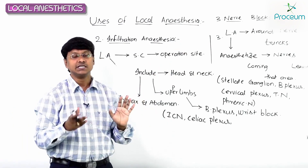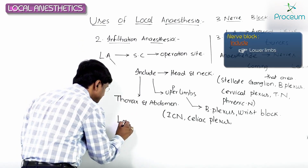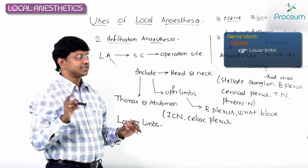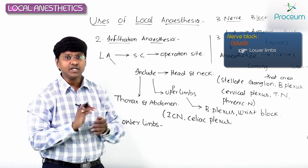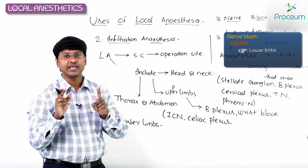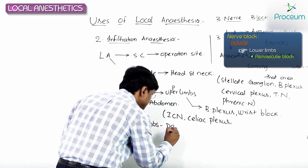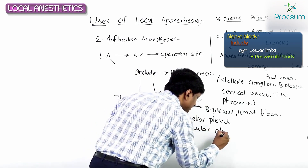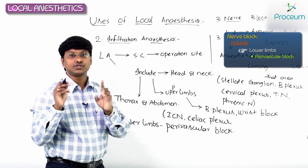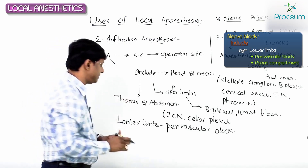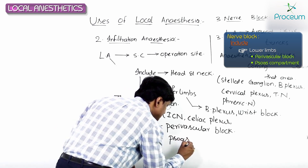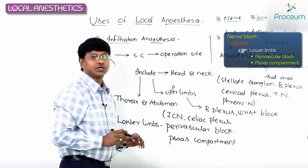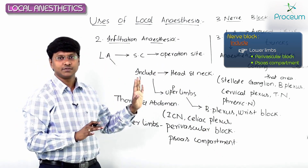The local anesthetic can also cause nerve blocks in the lower limbs. Once injected into the lower limbs, the blocks that can happen include the perivascular block and the psoas muscle compartment block.